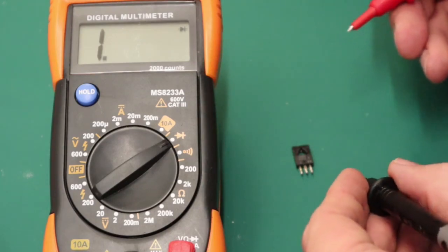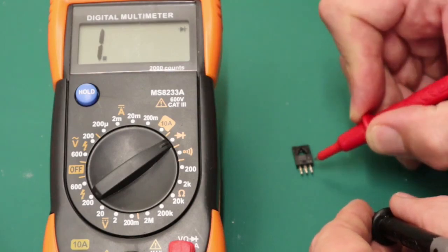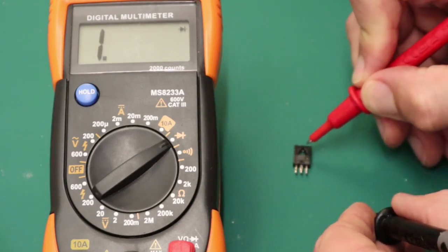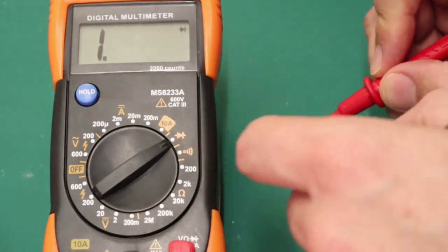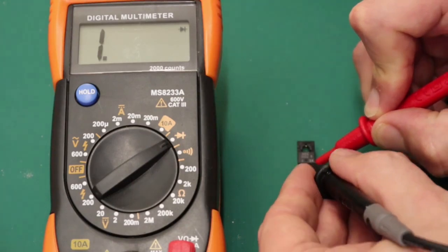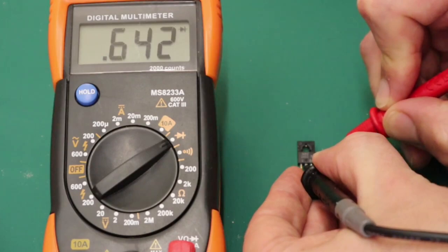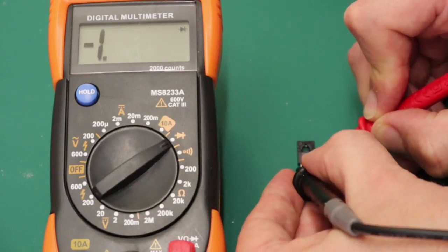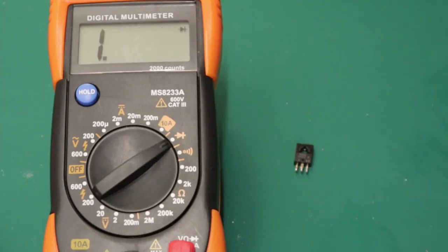So just taking a look at this transistor that I just removed from the Grandstand Astrowars. I know it's an NPN transistor and I know pin one is the base because it was labeled as the base on the board. I have my meter set to diode check. I'm just going to go on here with the positive on the base and I see I have 0.6 volt voltage drop to the collector, but I have a short to the emitter. So this is a faulted transistor. I'm going to go ahead and replace it.